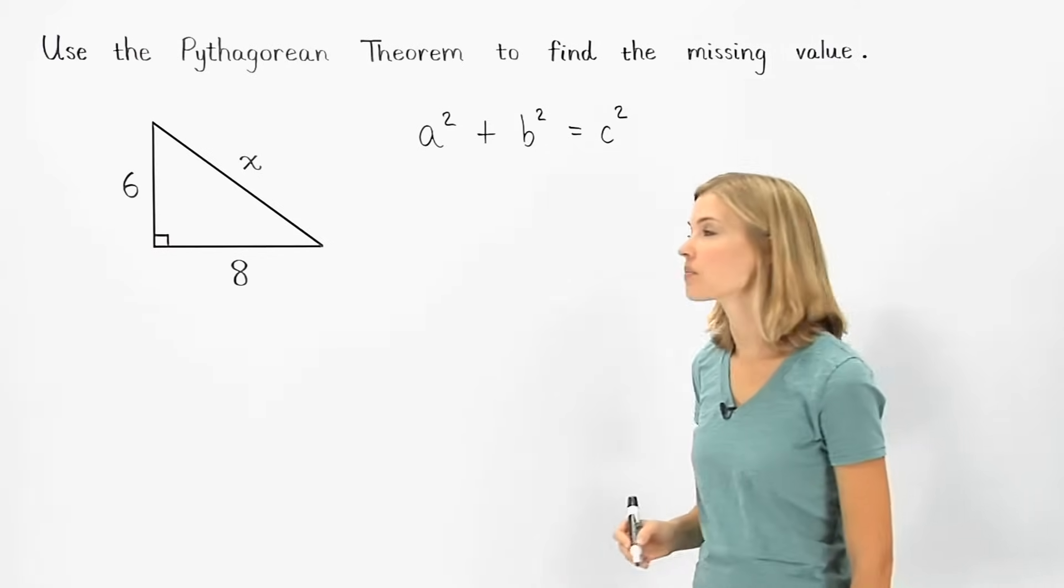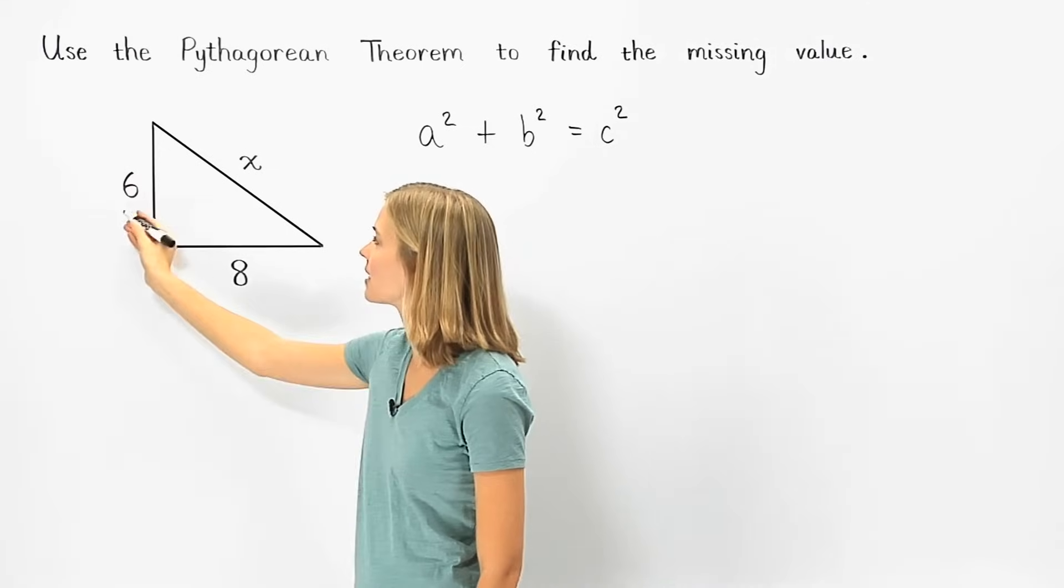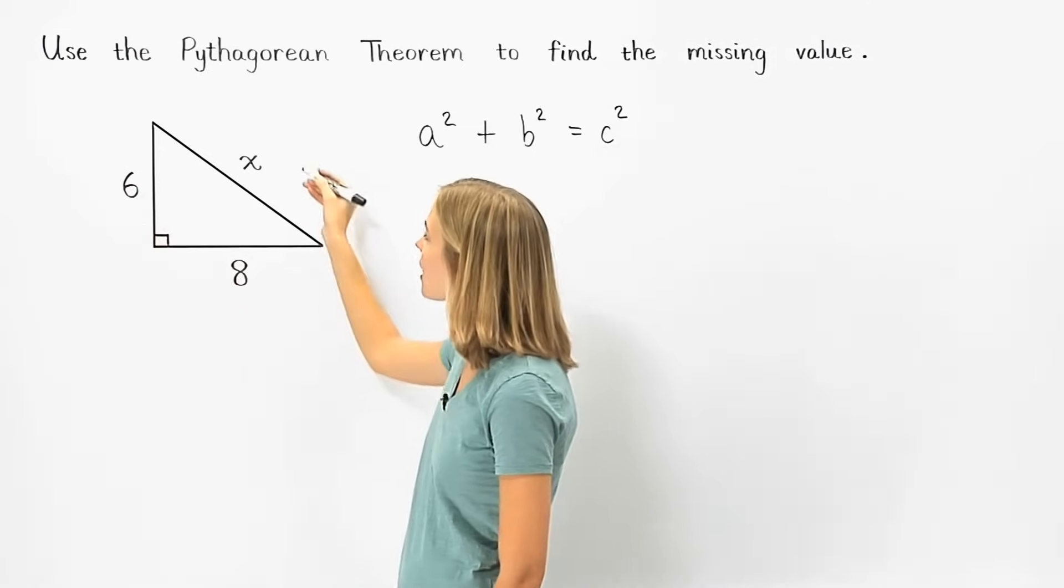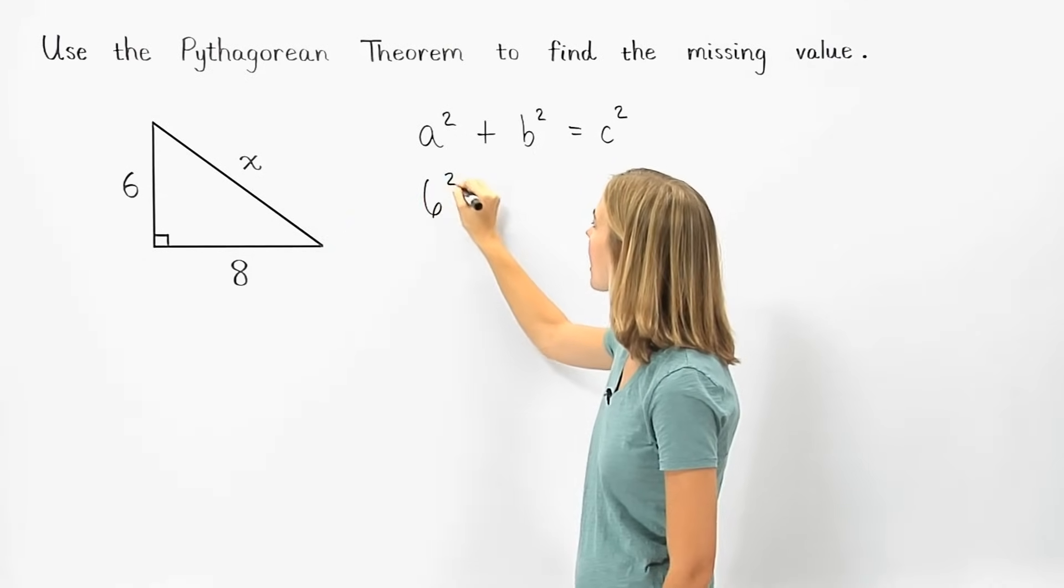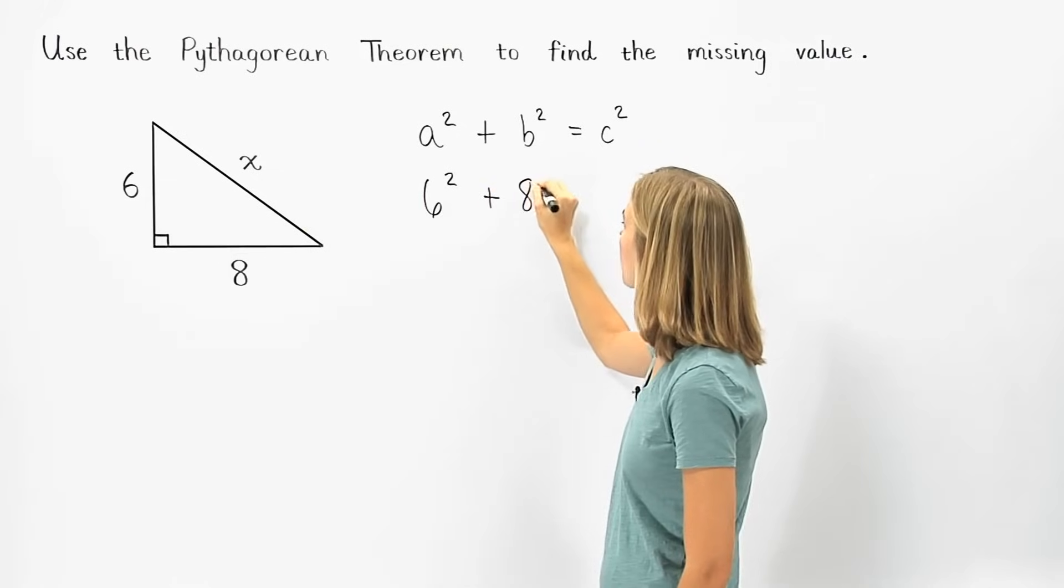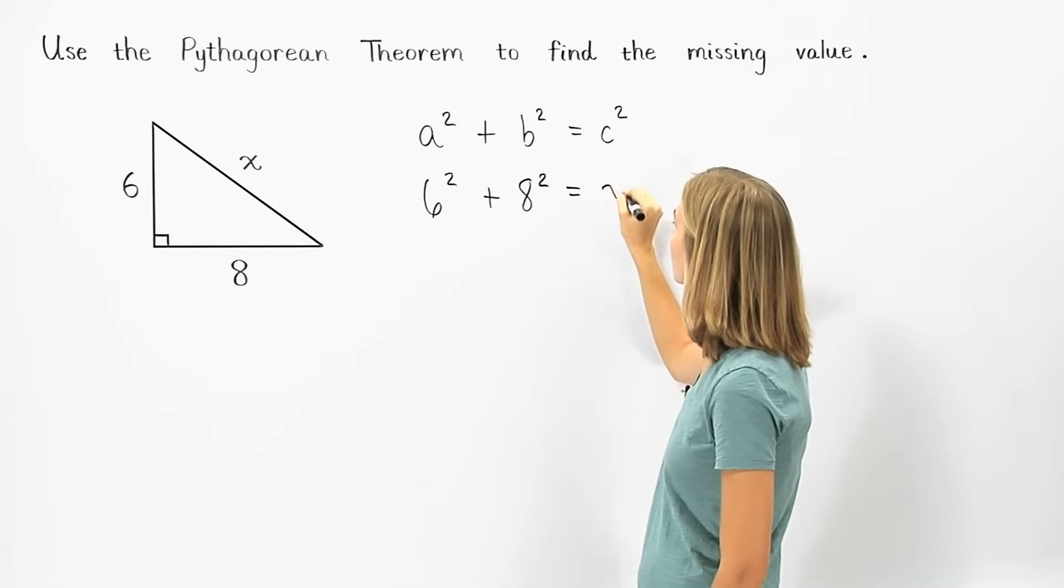So here, since the legs of the right triangle have lengths 6 and 8, and the hypotenuse has the length of x, we can set up the equation 6 squared plus 8 squared equals x squared.